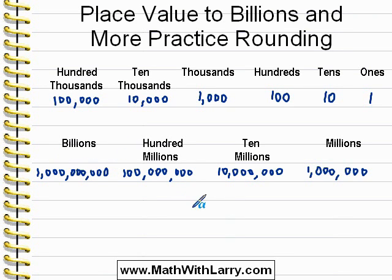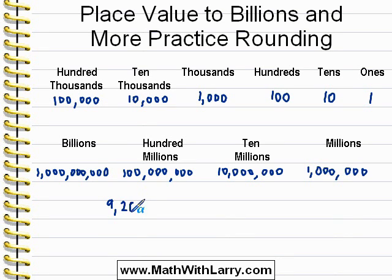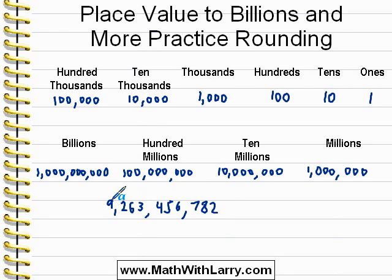One of the things that you may be asked to do is round one of these large numbers in a particular way. So I'm going to write a very big number — let me write it, and then we can figure out what this number actually is. It's a very big number, but the commas help us figure out what number it is. We can see that it's ten digits — it actually extends to the billions place. So we would say that this number is nine billion, 263 million, because the three is in the millions place, 456,782.